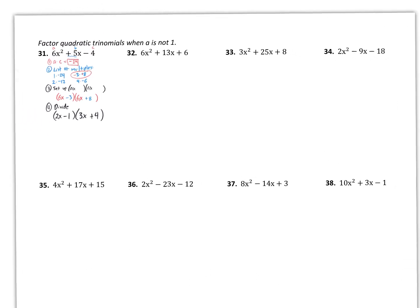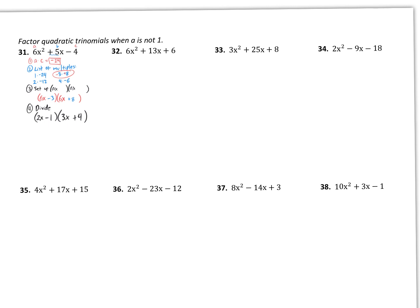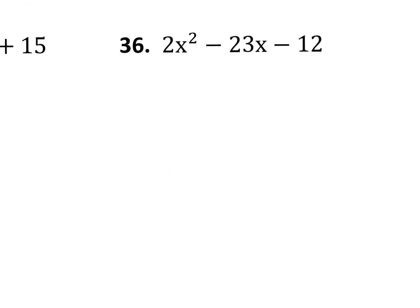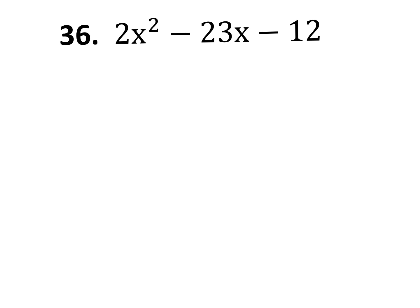Is there another one you'd like to see? 32 through 38? Anybody? Pick one. So let's try 36. Once again, we're going to write our steps. Step 1 is to multiply A times C, which A is 2, C is negative 12. So that's negative 24.